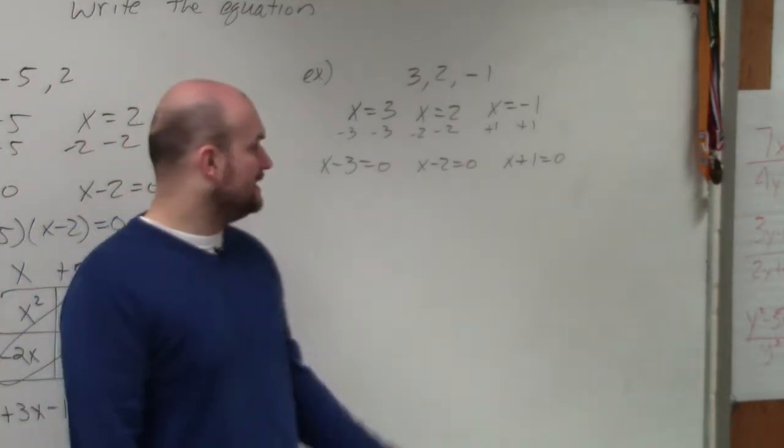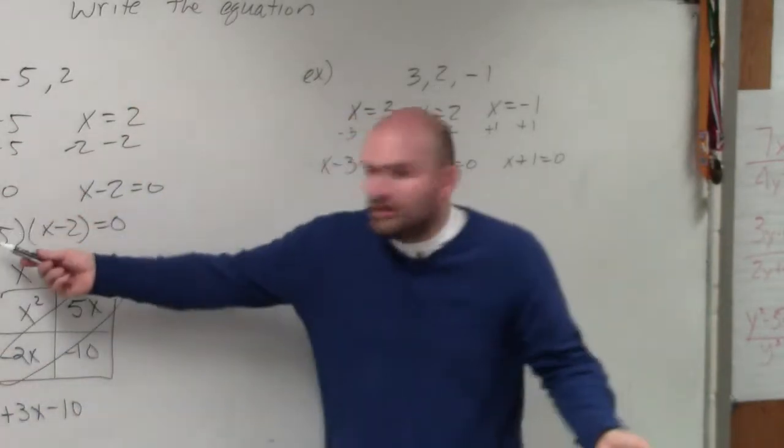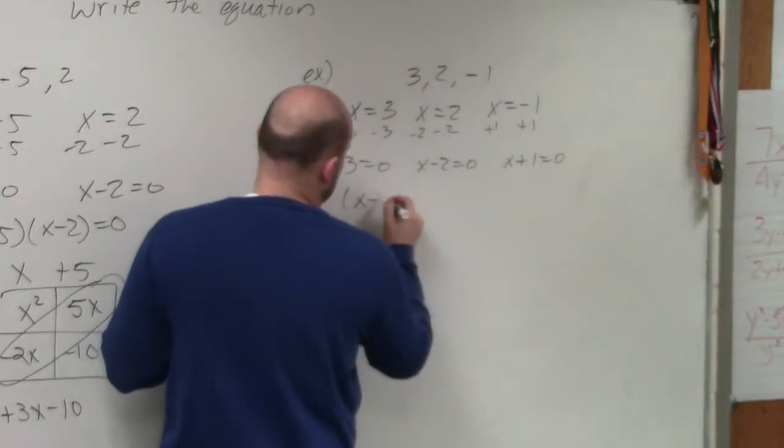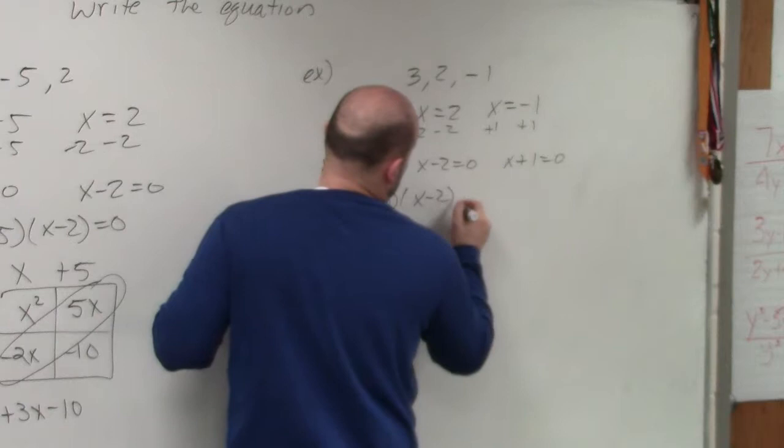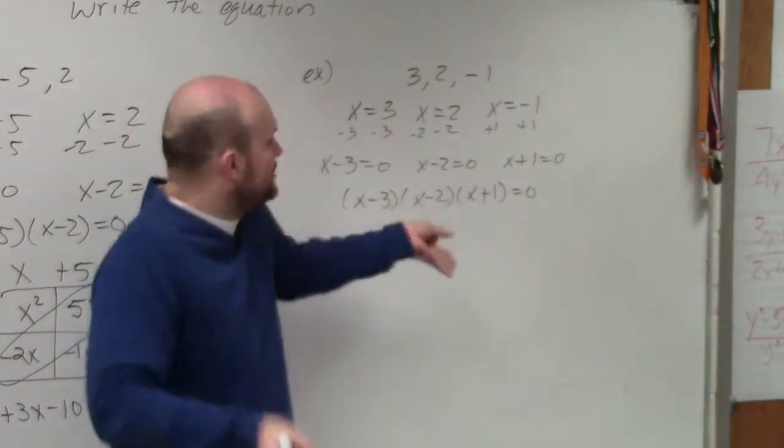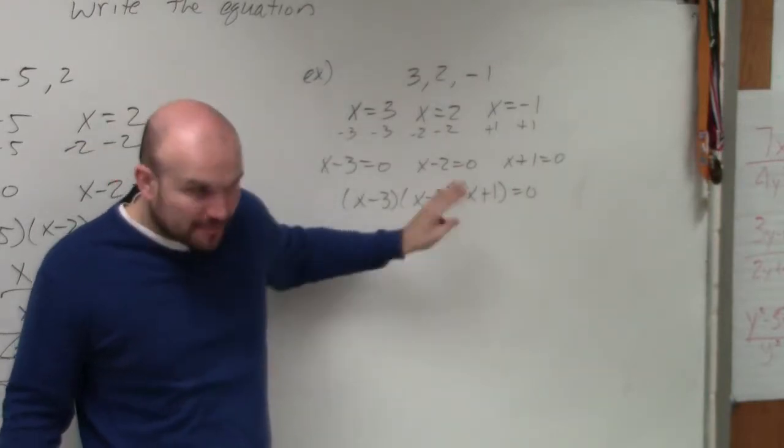Then the next thing is writing them as, remember, how did we get to these? We wrote them because we wrote them as factors, right? If you factor something to equal 0. So then the next step, I think, is not really that difficult. Everybody should understand at least what you have. When you're given the zeros, you should be able to get to this point.